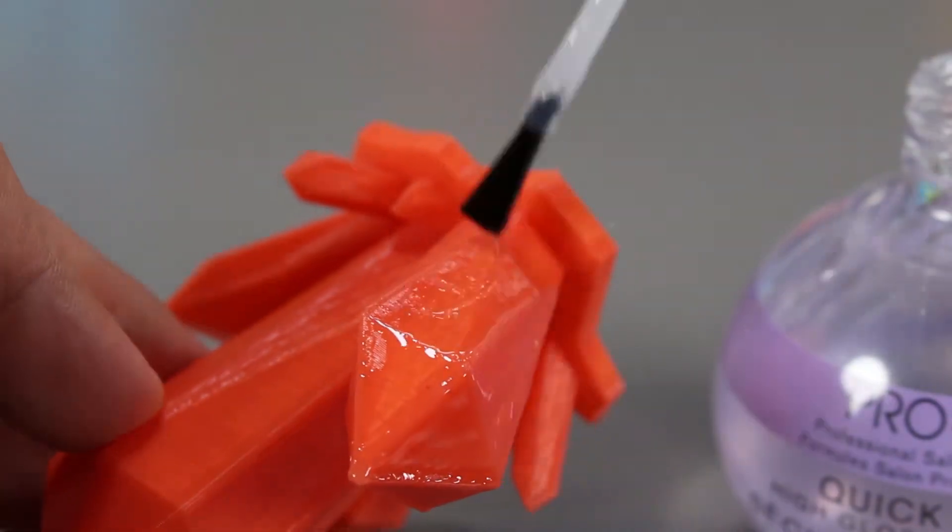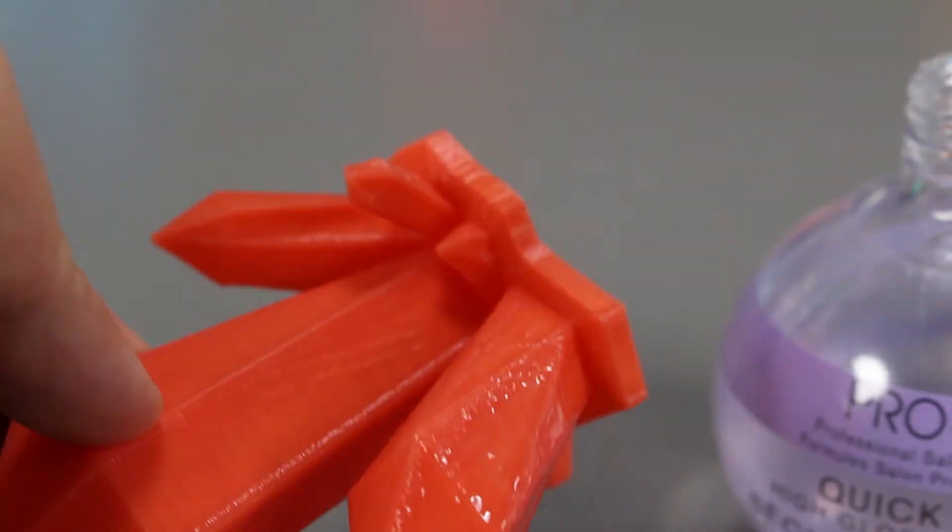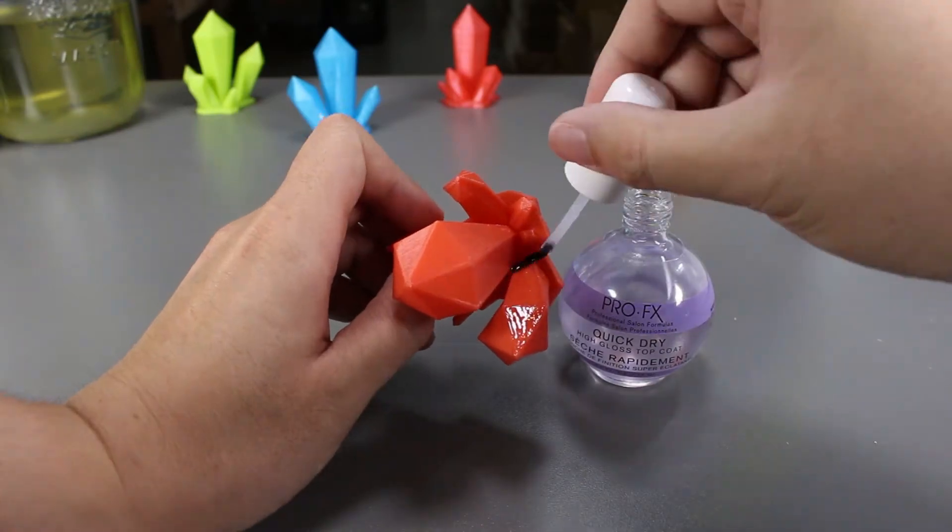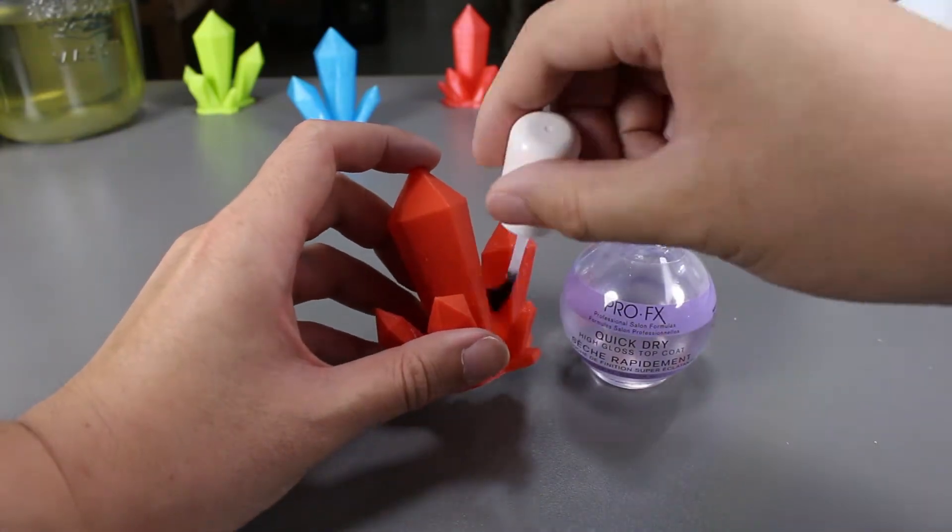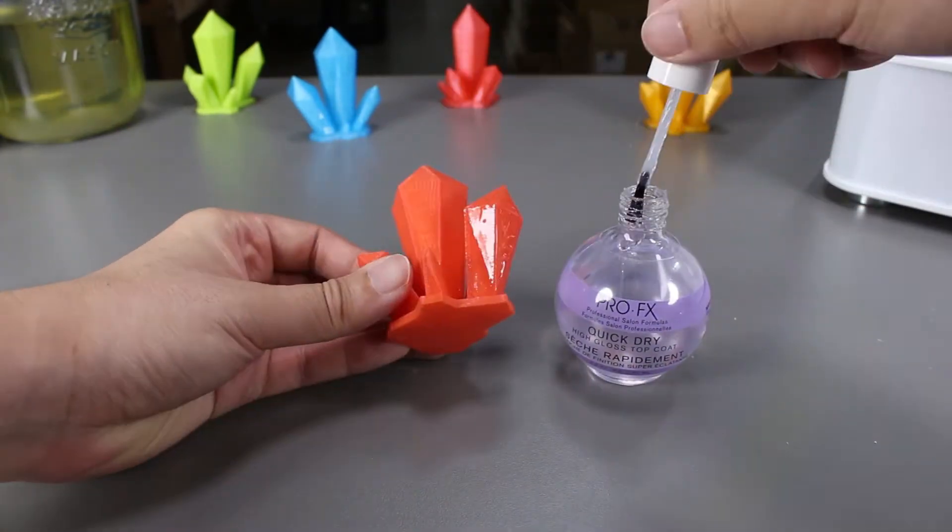The reason why this should work and melt the PLA is that the top coat does consist of ethyl acetate, which melts PLA over time. But I guess we'll find out.